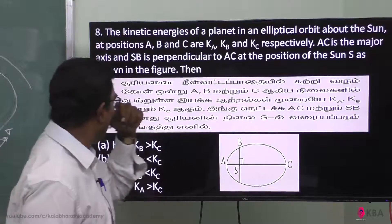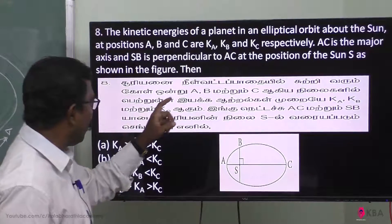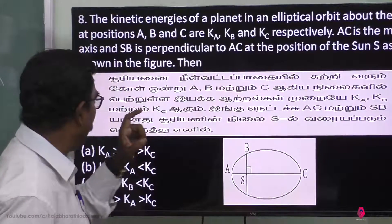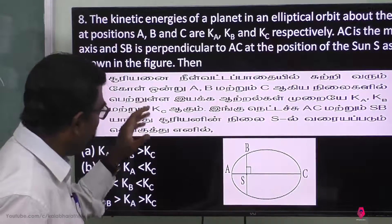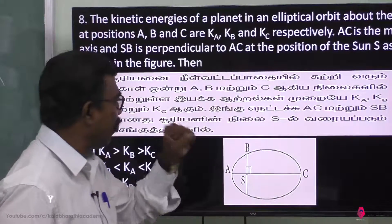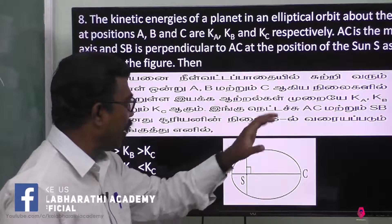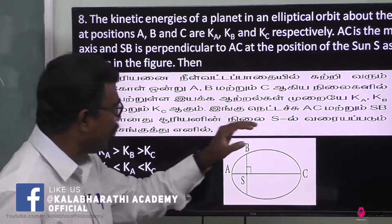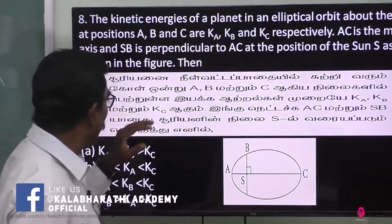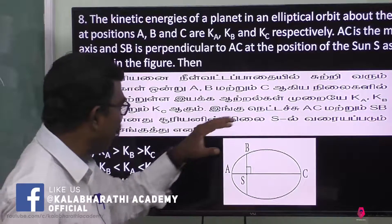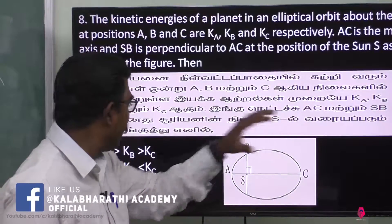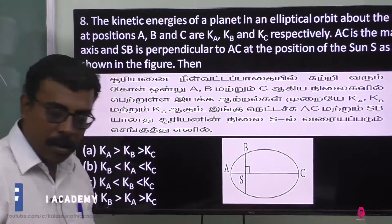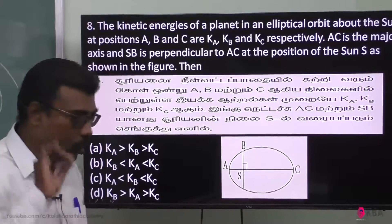Suryanay nilvettappadayil sutri varum kool ondru A, B matruum C arhiya nilayhodiil petruvillelayayak artrehal mureyya Ka, Kb matruum Kc arhiya. Yungu net h AC matruum SB arnathu Suryanay nilay S il varayappadu senguthi yenil, yenna artho mou sultri ampeleyengal?